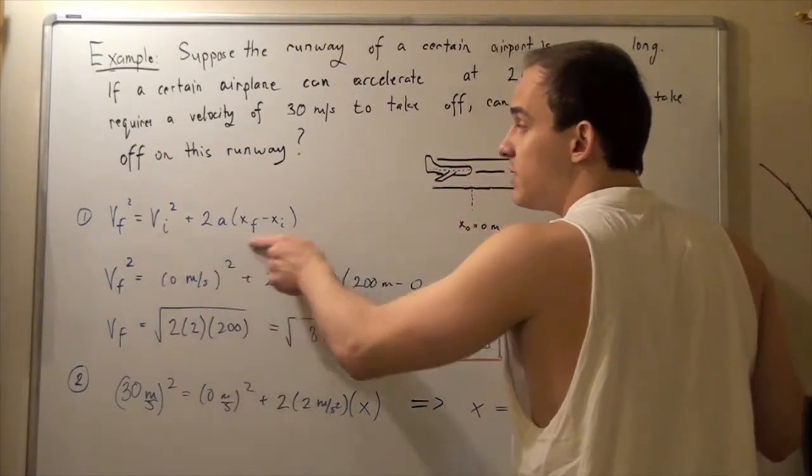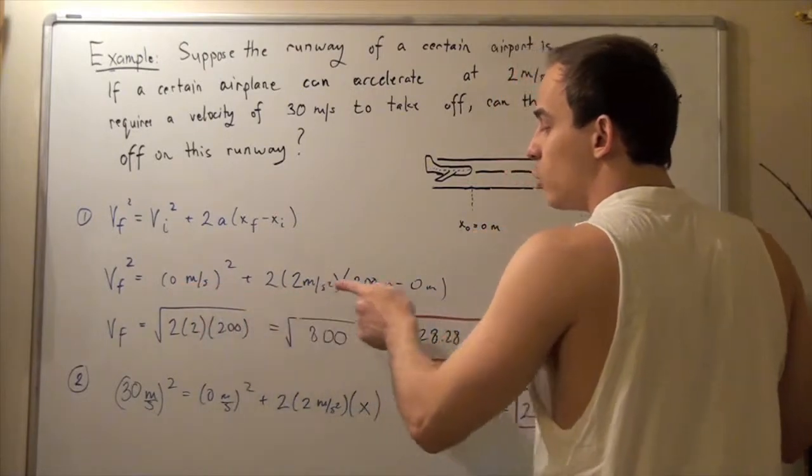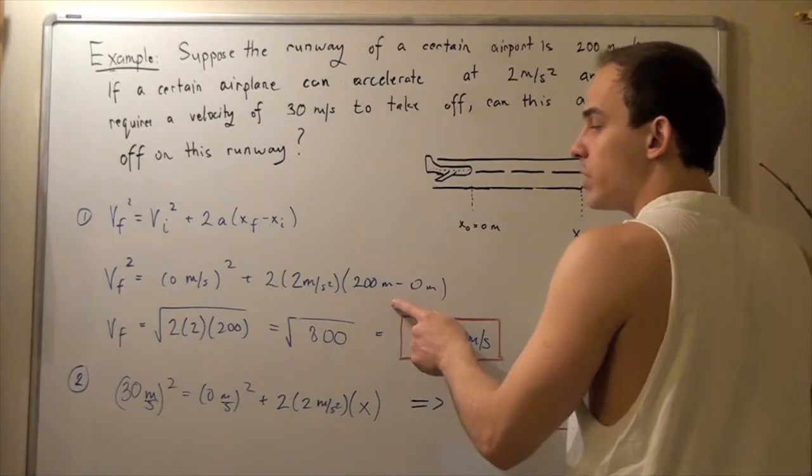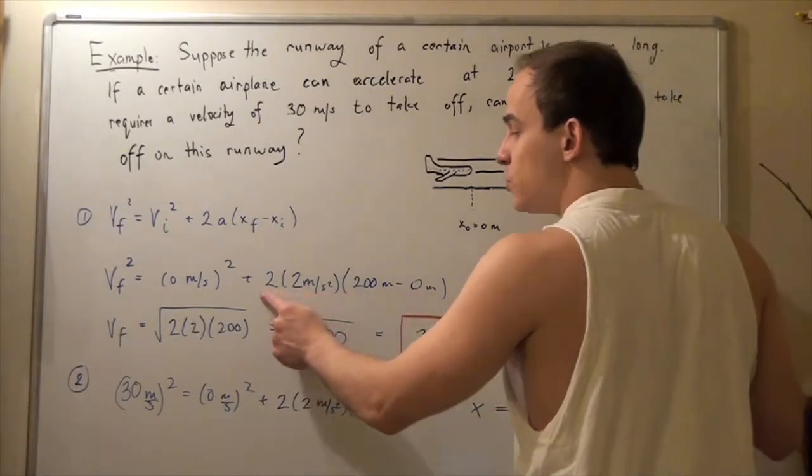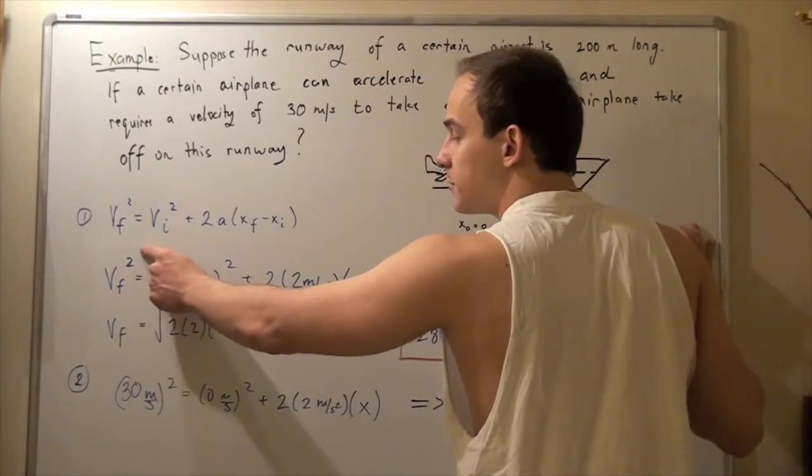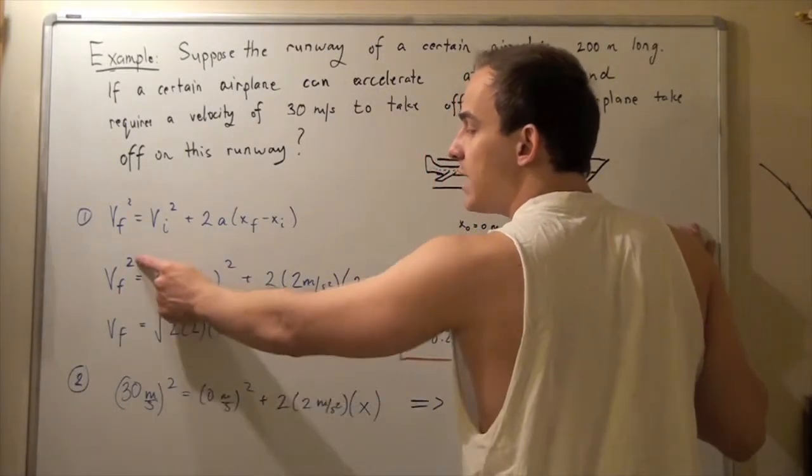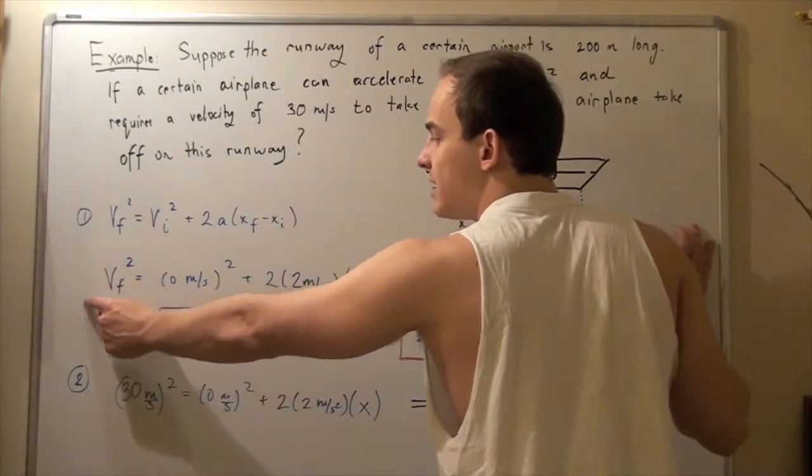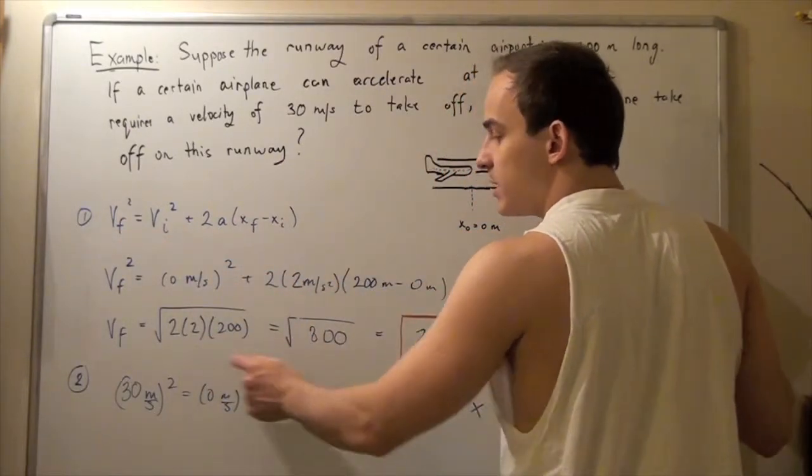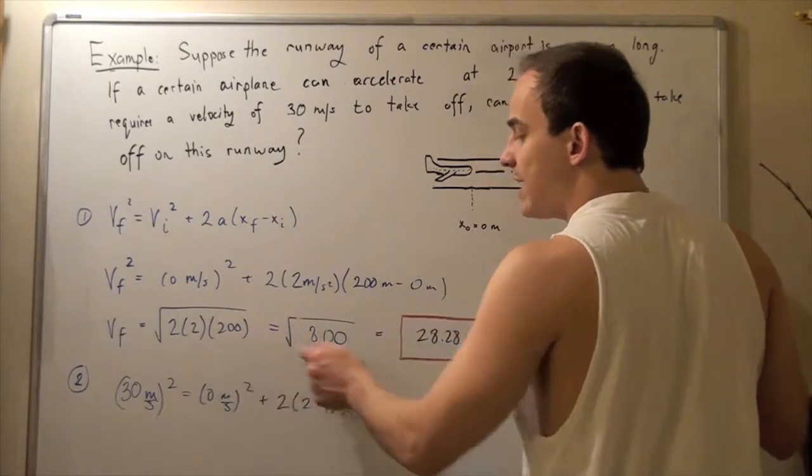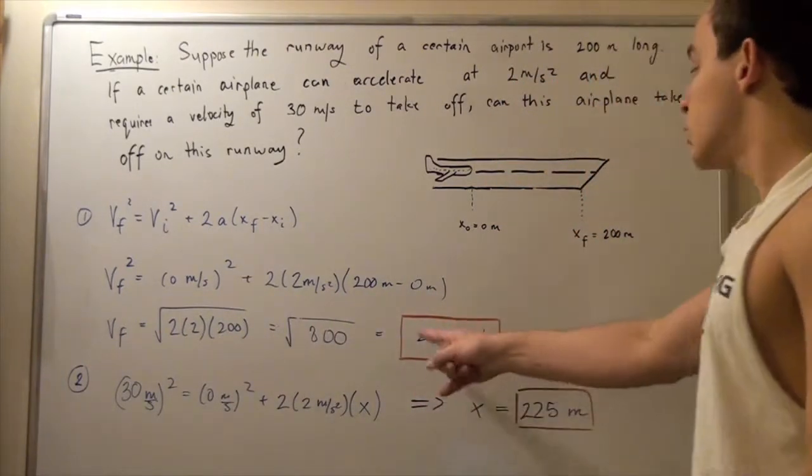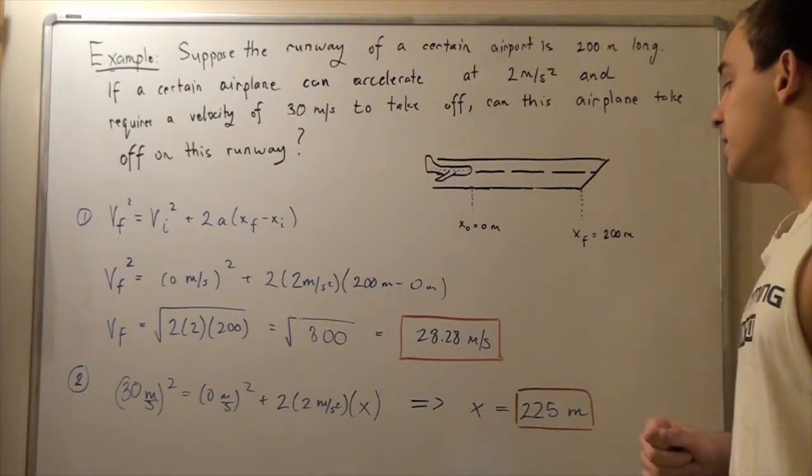So we plug all these values in and we get the following result. This term cancels out, this becomes 200, and we get simply 2 times 2 times 200 equals v final squared. So to get rid of this exponent, we take the square root of both sides, and we get 800, because 2 times 2 times 200 is 800. The square root gives us approximately 28.28 meters per second.